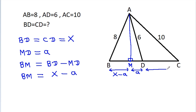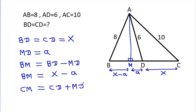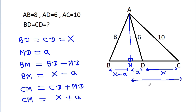And CD is X, so CM will be equal to CD plus MD. So CM is equal to CD which is X plus MD, and CM is X plus A.